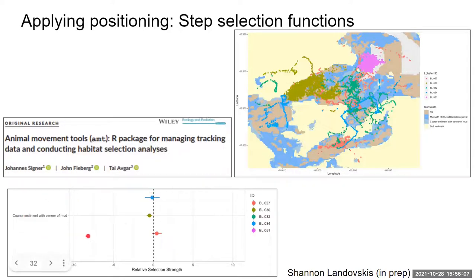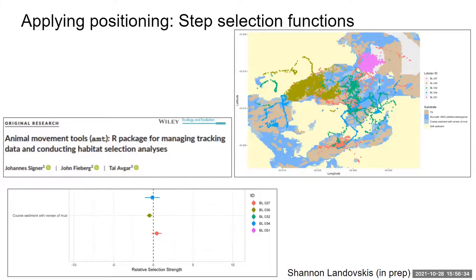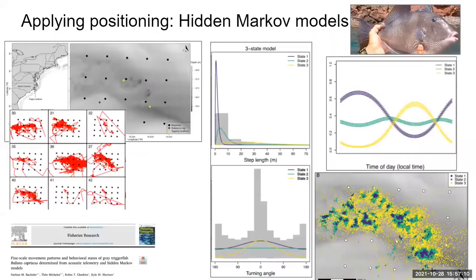You can see visually on the map that certain lobsters are using certain substrates preferentially. You can then look at the relative selection strength of lobsters on different substrates. Johannes Signer's AMT package — I don't see it used in aquatic telemetry very often, but the applications are exciting. I contacted Johannes about step selection functions and he was very kind and is excited to integrate this into more aquatic research. I hope people use this with their positioning data more — it's a really cool and important tool for understanding habitat selection.